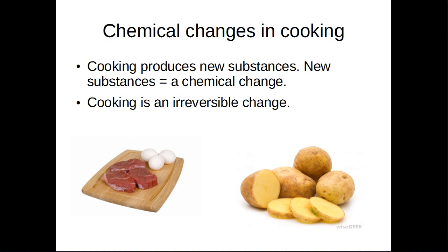Cooking food produces new substances, which means a chemical change has occurred. So when a chemical change has occurred, you know there's been one when there are new substances. Cooking is an irreversible change. Two examples of cooking include eggs and meat, and potatoes.